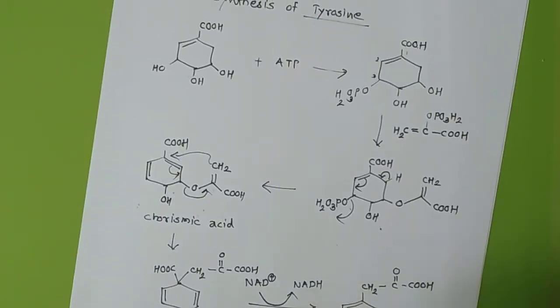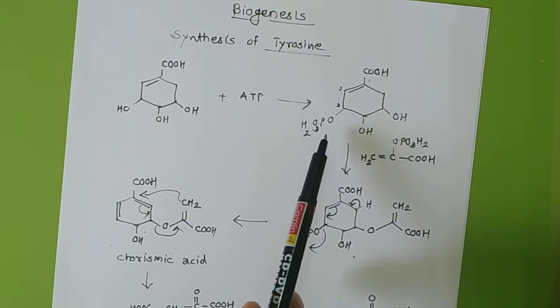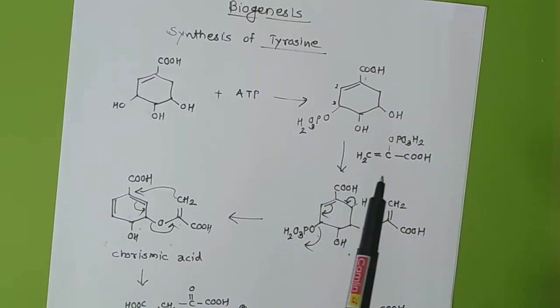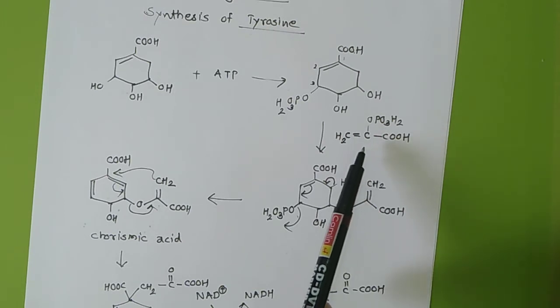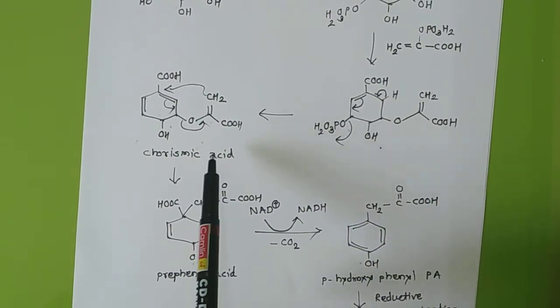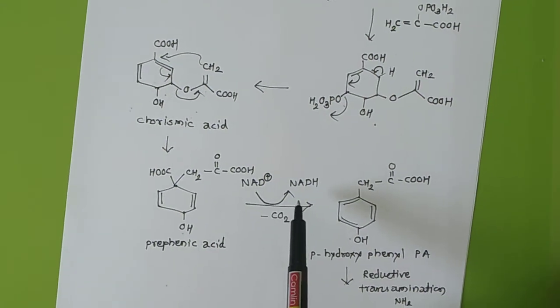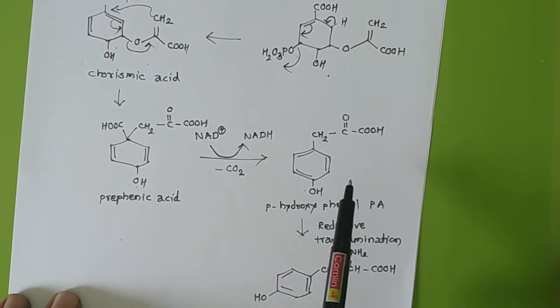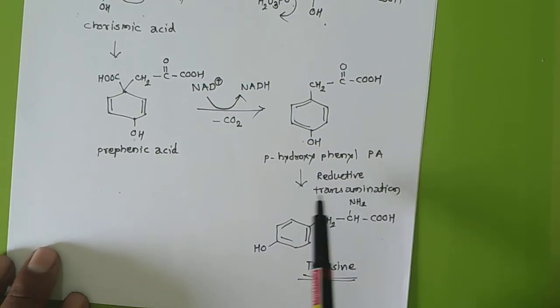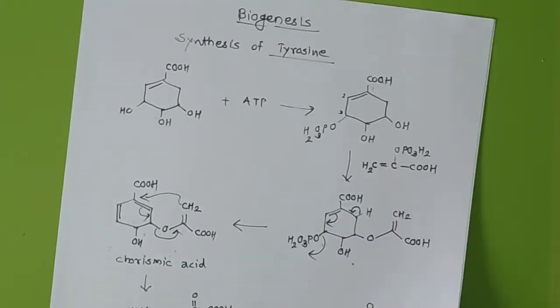So in a very precise way we have prepared tyrosine, another aromatic amino acid, from shikimic acid. To summarize: we started with shikimic acid, added the 3-phosphate group, then reacted with phosphoenolpyruvate to get an intermediate, then formed chorismic acid, from chorismic acid we got prephenic acid, then via decarboxylation and oxidation (minus CO2) we got para-hydroxyphenylpyruvic acid, and after reductive transamination we get tyrosine.